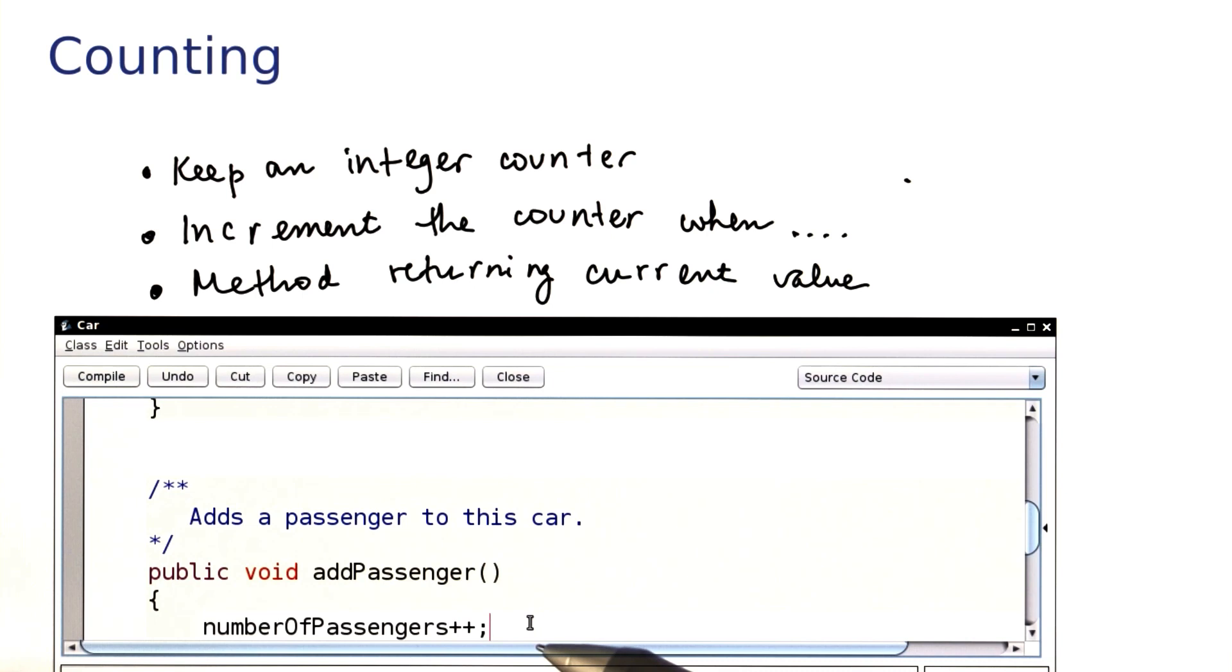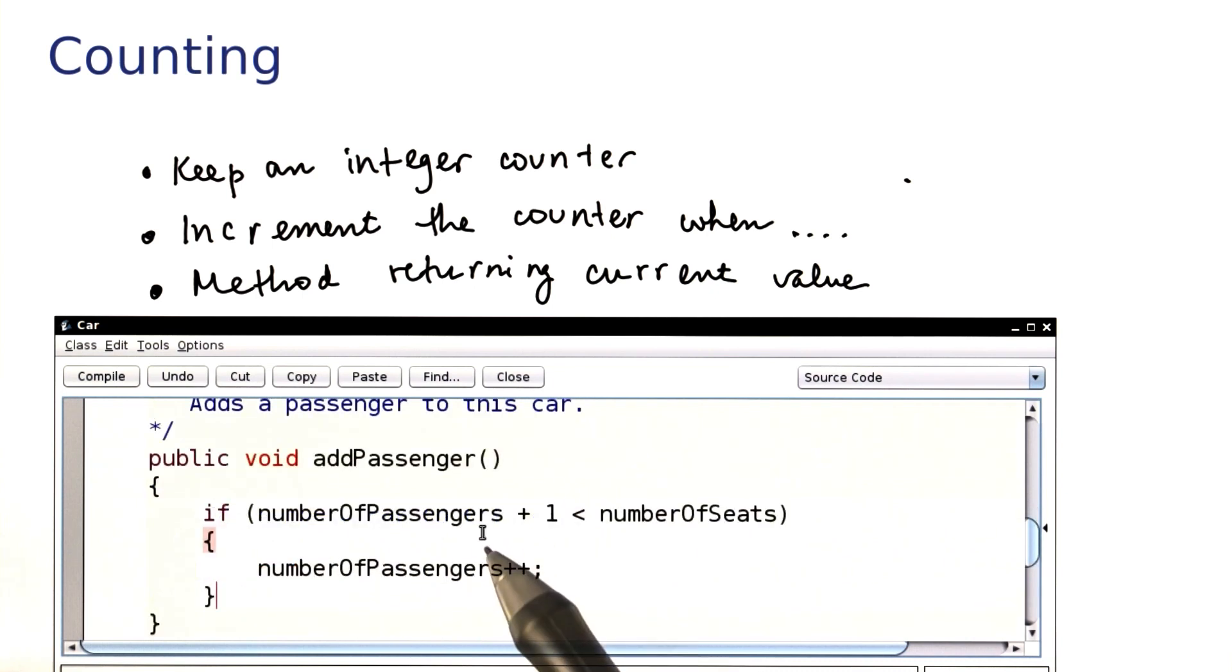But of course there's a twist. You can only add a passenger if there's room. So we need to check if the number of passengers plus the one that I want to add is less than the number of seats.